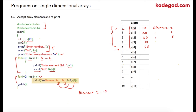In the first iteration, 'i plus 1' equals 1, so 'element 1' is printed. Then a[0], which is 10, is printed after the colon. In the next iteration, 'element 2: 20' will be printed on the next line. Similarly, the subsequent iterations print element 3: 30, element 4: 40, and finally element 5: 50 on the output screen.